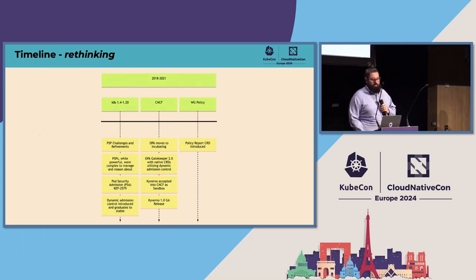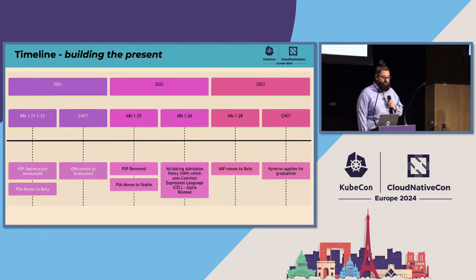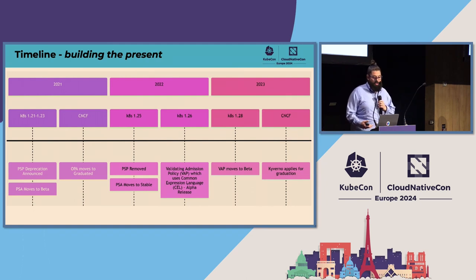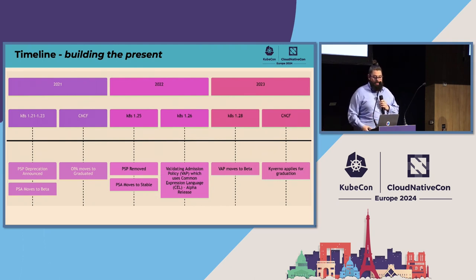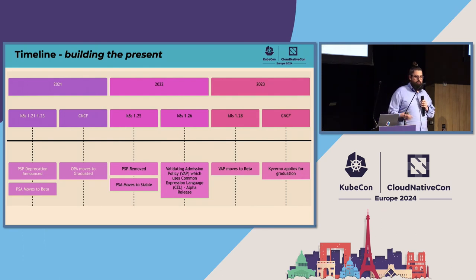That was the formative time for what we see as the current state of policy. In the last few years, a lot of different stuff happened: PSP was officially deprecated and removed from the API, pod security admission moved into stable, and we started seeing validating admission policy. Validating admission policy using the CEL expression language is now in beta in Kubernetes 1.28 and on. Kyverno applied for graduation last year and OPA also graduated — we're starting to see all of these different engines mature, including the in-tree policy engines.